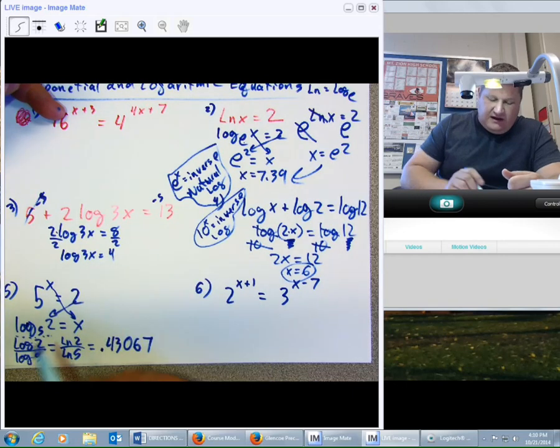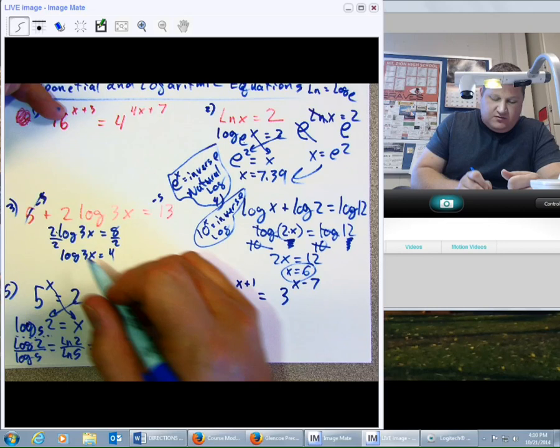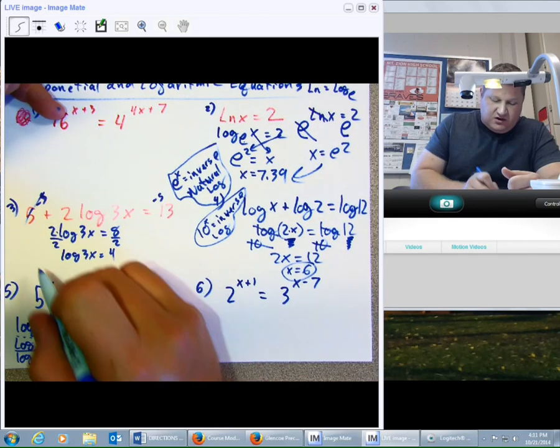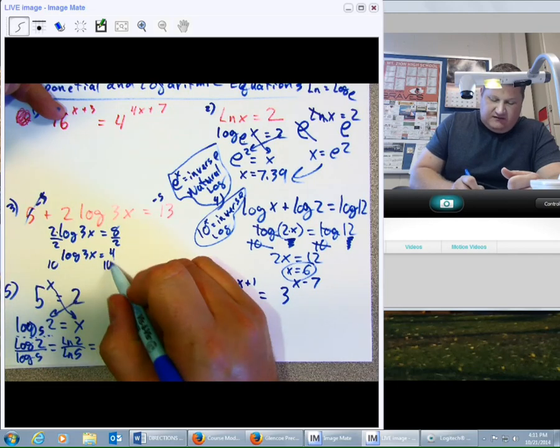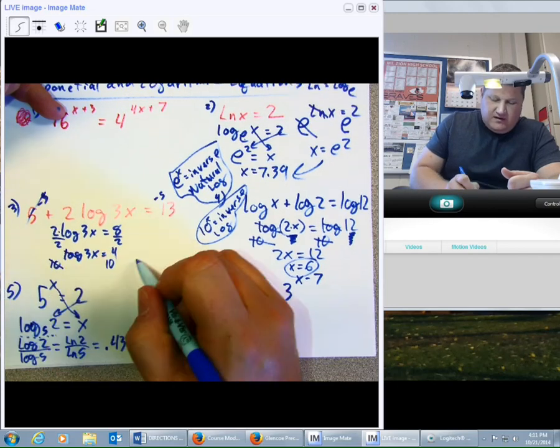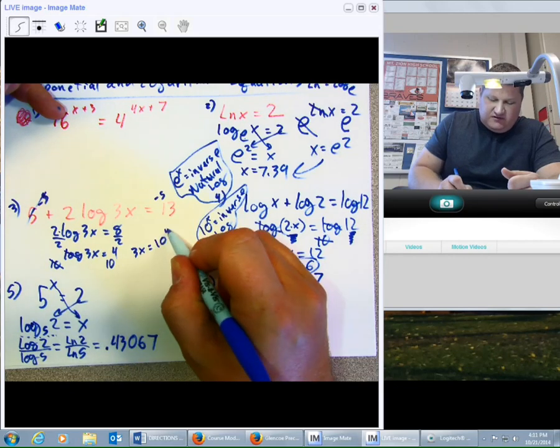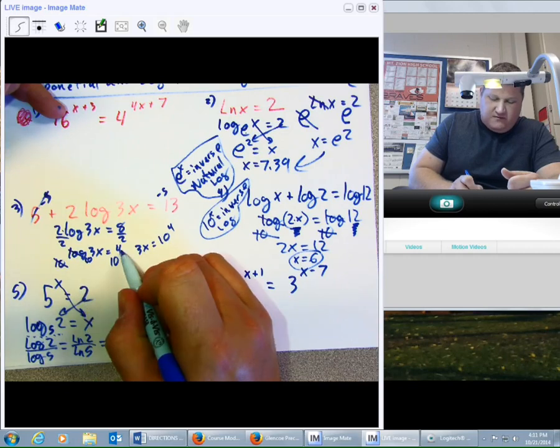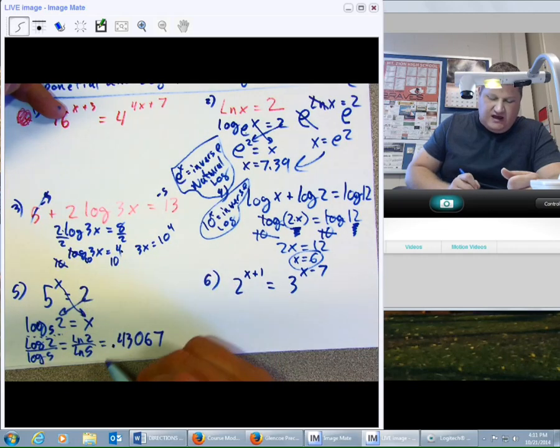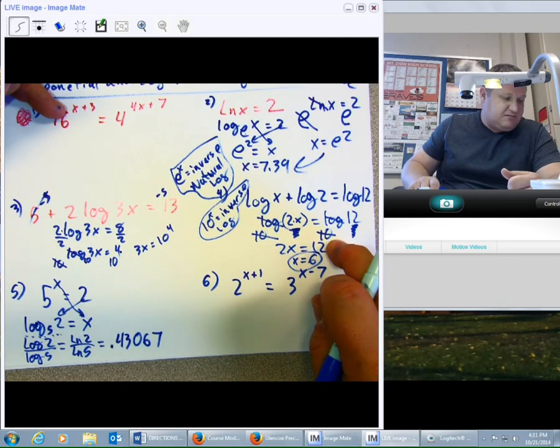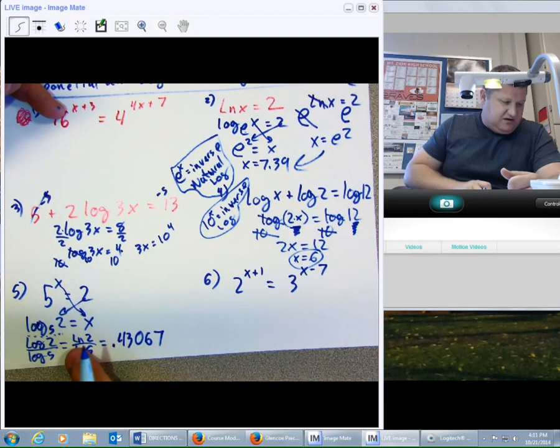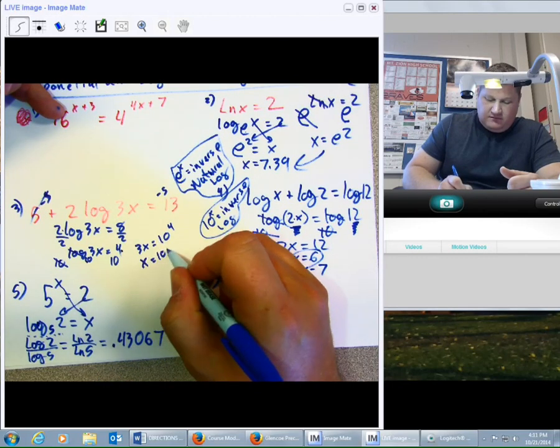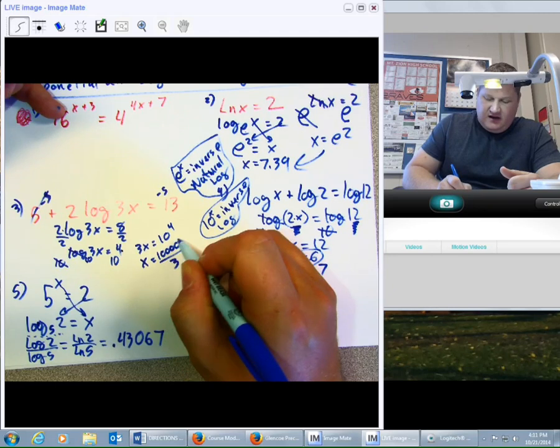At this point, I have an x inside a log, so I'm going to need to actually do the inverse of the log. So, I could either say 10 and 10 with 3x equals 10 to the 4th, or I could use the basis and say 10 raised to the 4th power equals 3x. Either way I choose to do it, whether it's by this thought method, or this thought method, or this thought method, it all works the same. So, x equals 10,000 divided by 3. There we go.